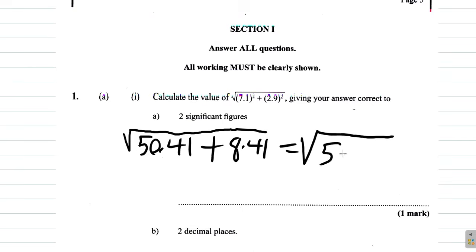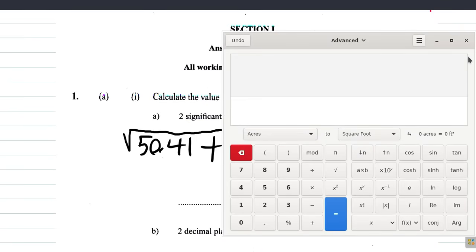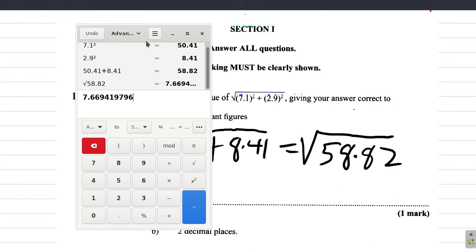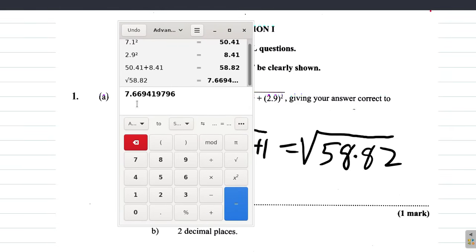That's 58.82, so we are going to find the square root of 58.82. The square root equals 7.669... and it goes on. But you're asked to give your answer to two significant figures. Now remember, the number of significant figures is the number of digits you see as you look from left to right, with the first non-zero digit being the first significant figure. That means 7.669 — you could write as many zeros as you want before the 7, but they don't count.